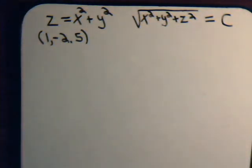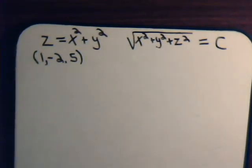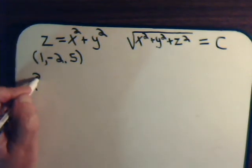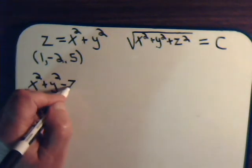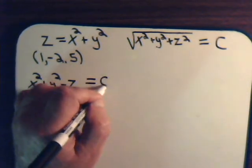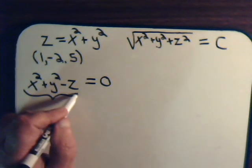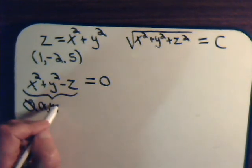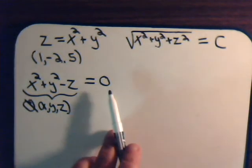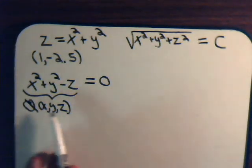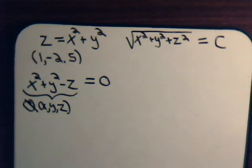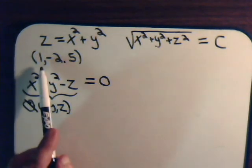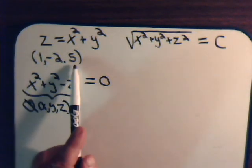For our first problem, our surface is z equals x squared plus y squared. We can rewrite this as x squared plus y squared minus z equals zero. This is our scalar function ψ(x, y, z) equal to zero — a constant — so this is the equation for a particular three-dimensional surface. We want to find the unit normal vector on this surface at the point x equals 1, y equals negative two, and z equals five.